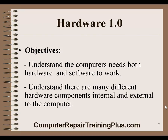Hardware 1.0 — the objectives. There are a few things we're going to be trying to learn and understand. The first is that the computer needs both the hardware and the software to perform any tasks or work. One can't do anything without the other. The software actually drives the hardware and allows it to perform and process information. We also need to understand there are many different hardware components.